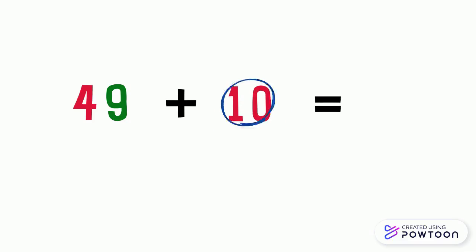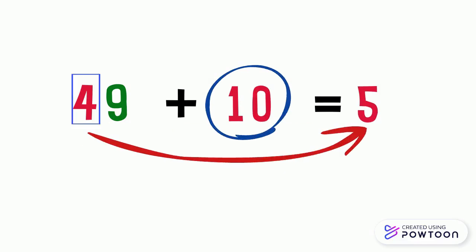A new example, 49 plus 10. When we want to add 10 to 49, we add one 10 to the tens digit, which is 4. So, it becomes 5. And of course, the ones digit does not change. So, 49 plus 10 equals 59.